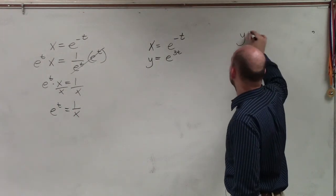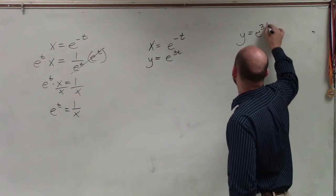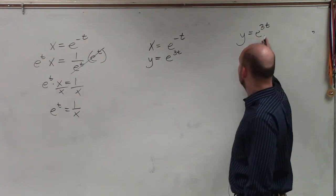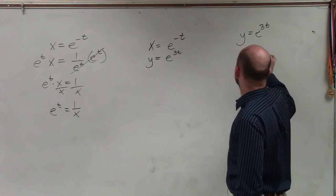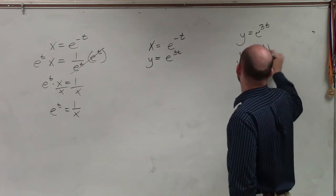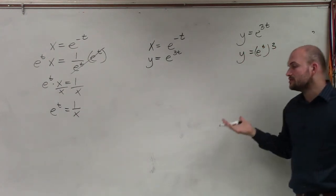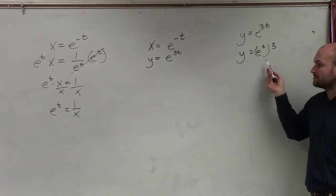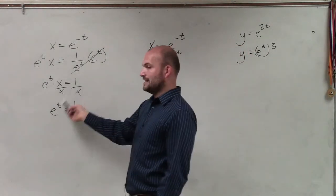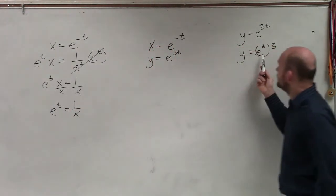So to do that, I rewrite y equals e to the 3t. To rewrite this as e to the t, I can rewrite this as e to the t times 3. And also by transforming it, by rewriting it this way, I can easily see that I can plug in e to the t as 1 over x.